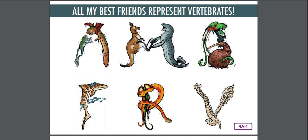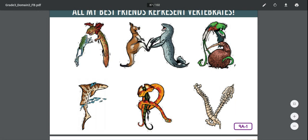If you look at this poster, this helps you to remember. We have A for All, M for My, B for Best, F for Friends, R for Represent, and V for Vertebrates. Plus they give you pictorial hints about what the A stands for. A is Amphibian, and all of these animals are vertebrates.